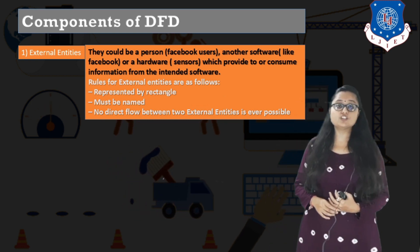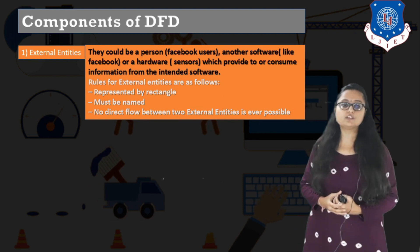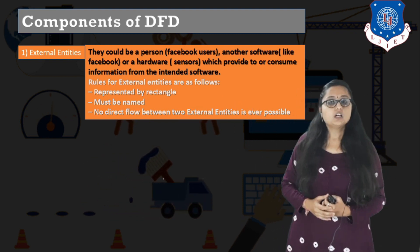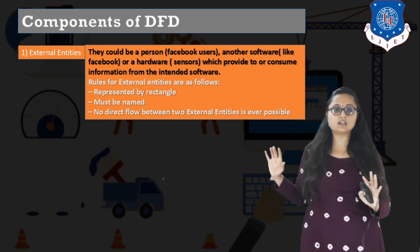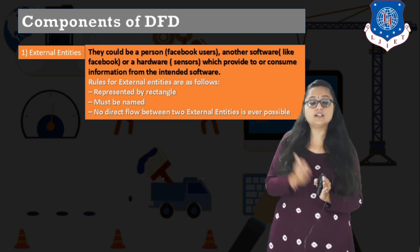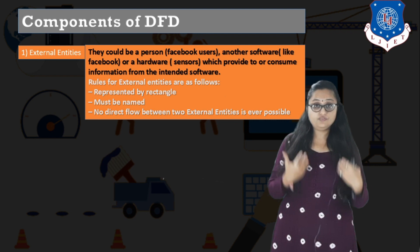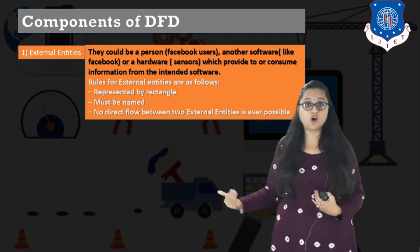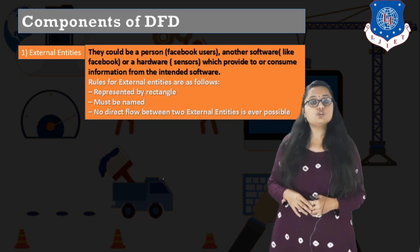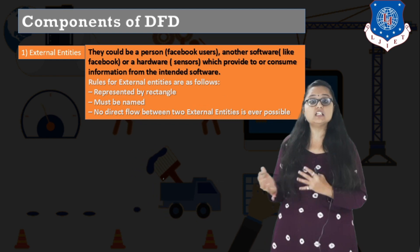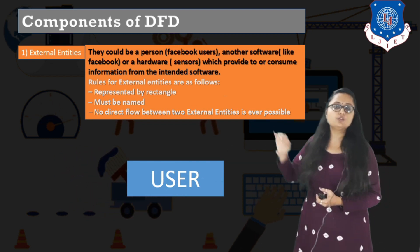Data flow diagram has many rules for every component. For external entity: it is represented by a rectangle and it must be named — you cannot have an unnamed external entity. Also, there is no direct flow between one external entity and another; there must always be a process in between. External entities cannot communicate with each other without a process. The symbol is a rectangle with the entity's name written inside.